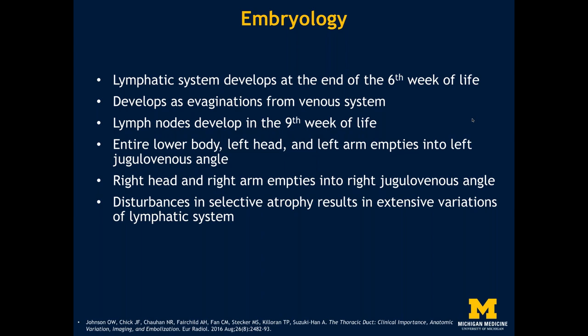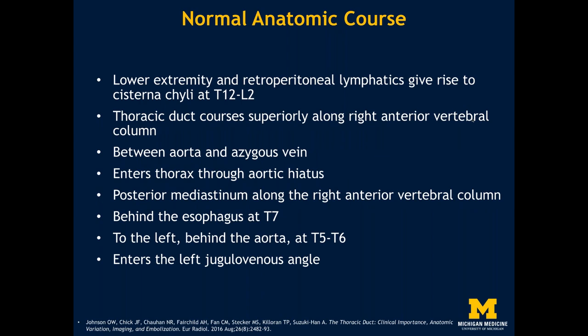One component is the thoracic duct, draining the lower legs, abdomen, and entire left side of the body, emptying into the left jugular venous angle. The other is a smaller right-sided lymphatic system draining the right arm and right side of the head into the right jugular venous angle. Abnormalities in development can cause congenital disruptions of the lymphatic system leading to clinical problems.